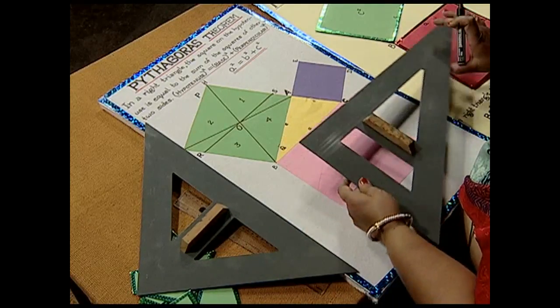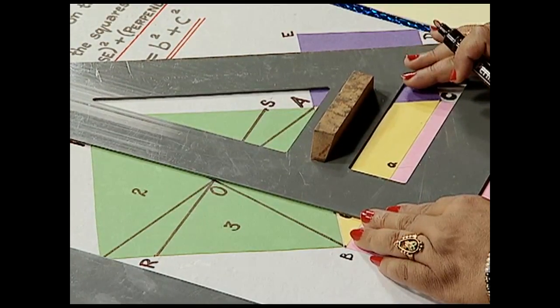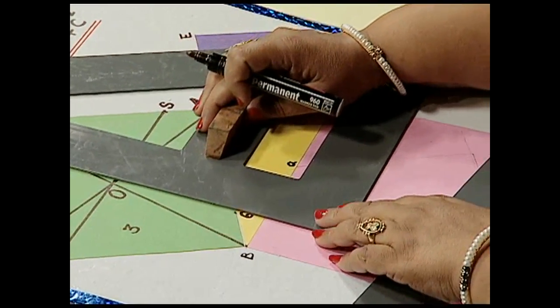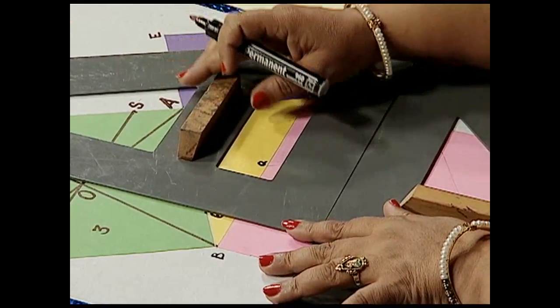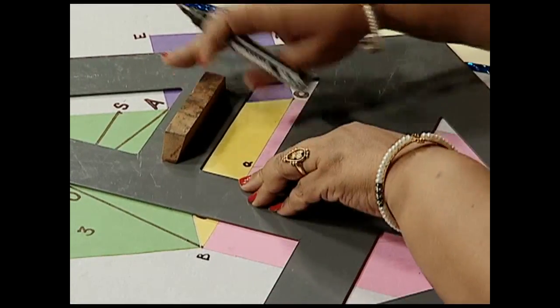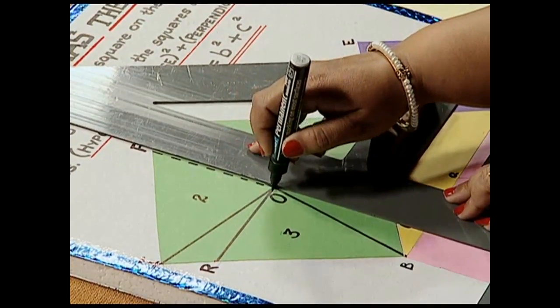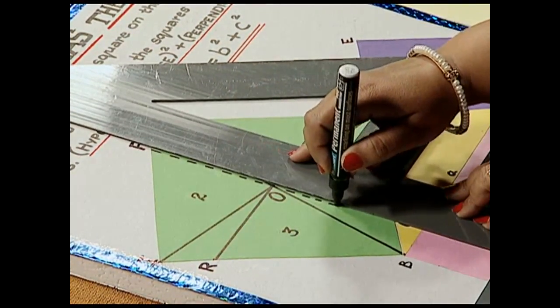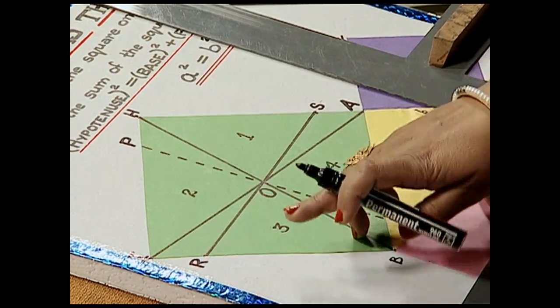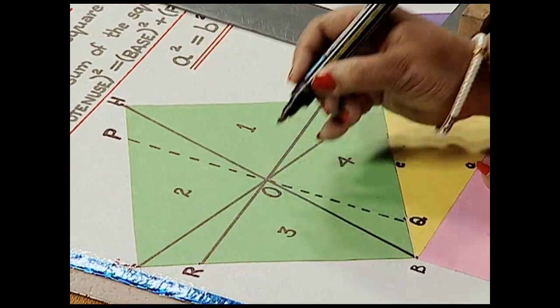Now we also construct a line PQ which is perpendicular to line RS in this manner. This way we see that RS and PQ both intersect at point O.